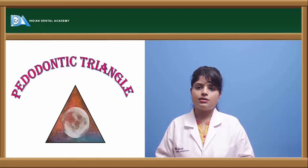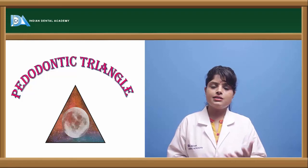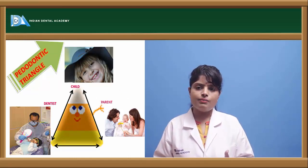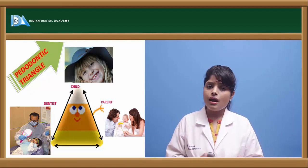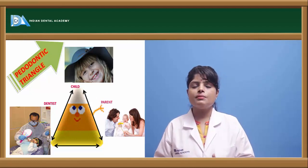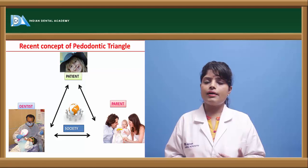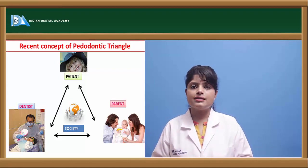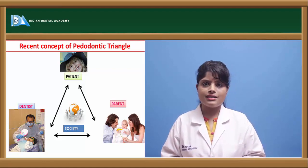The pedodontic triangle describes the relationship between the dentist, the parents, and the child. In the triangle, the child is present at the apex and the dentist and parents are at the base. There is an interrelationship and interdependence of all three elements. Both the parents and the child obey the commands of the dentist, and there is a reciprocal relationship depicted by arrows. The child and dentist are interdependent; the dentist instructs both children and parents for oral health care needs and treatment.